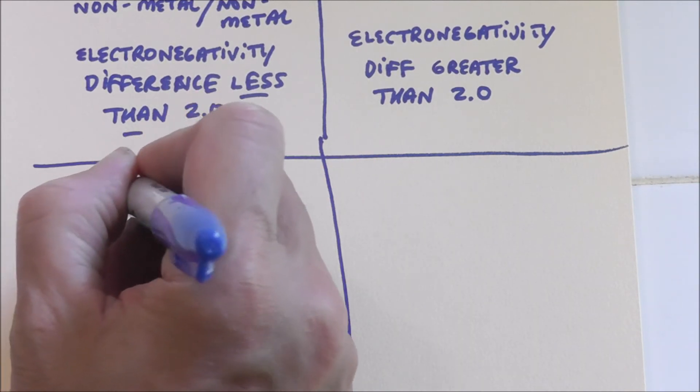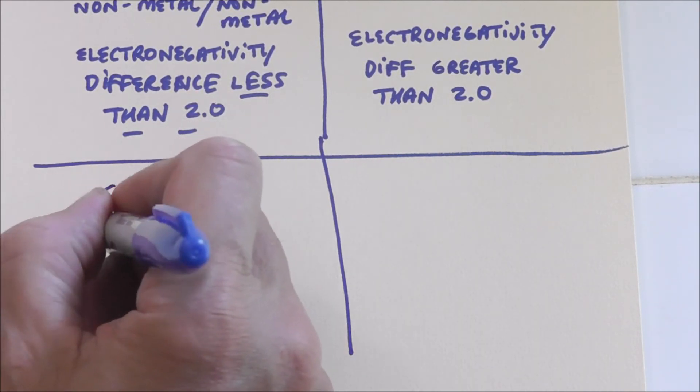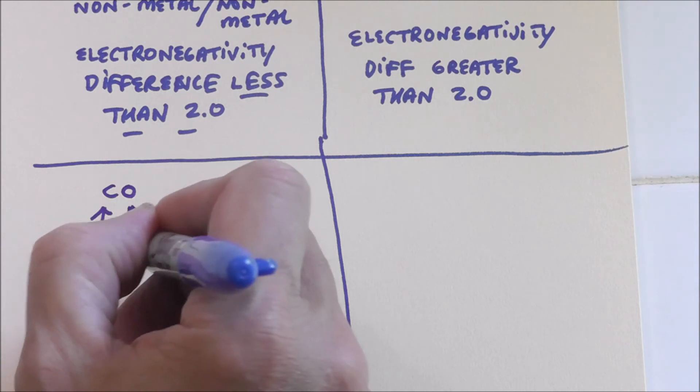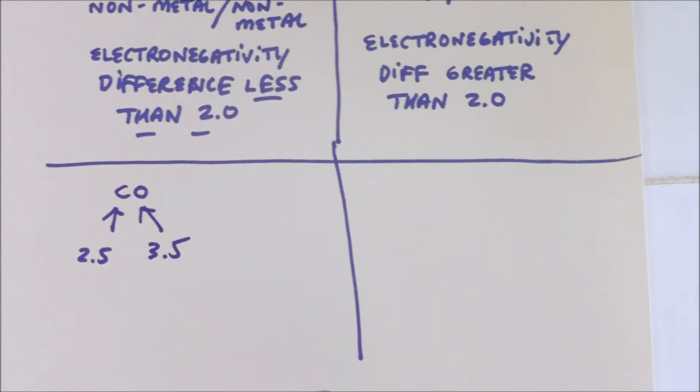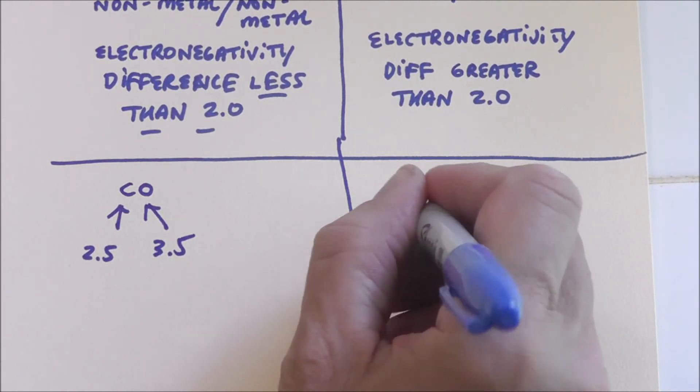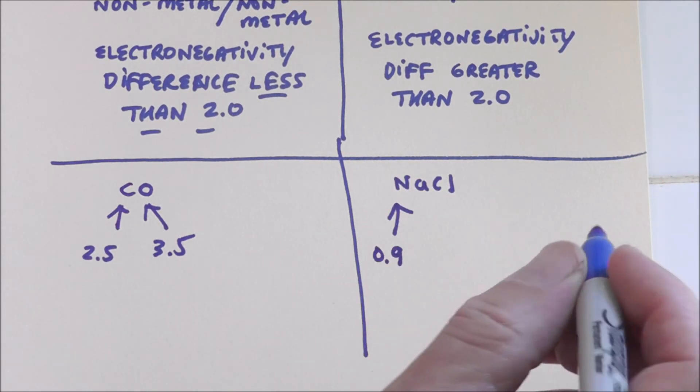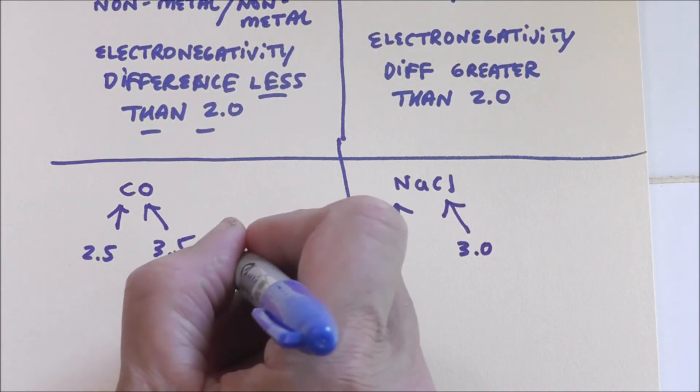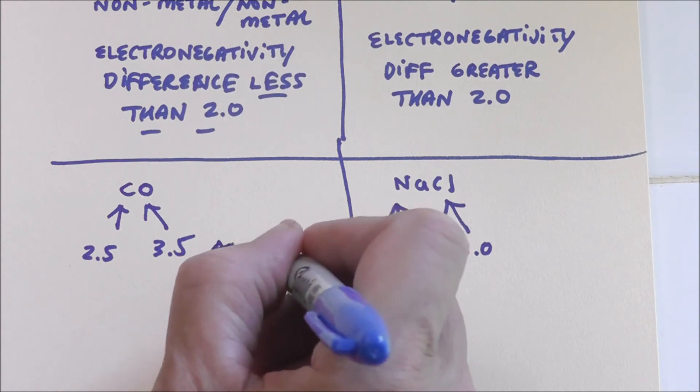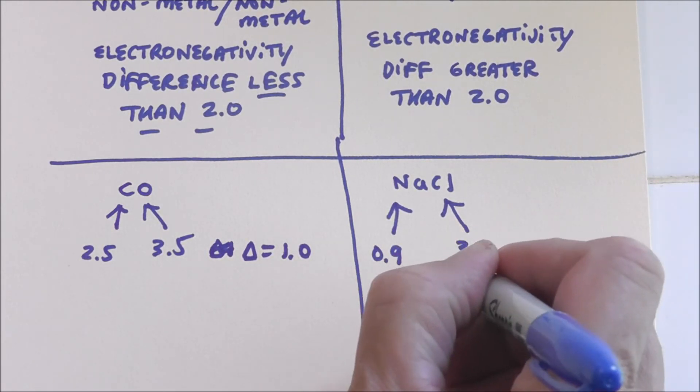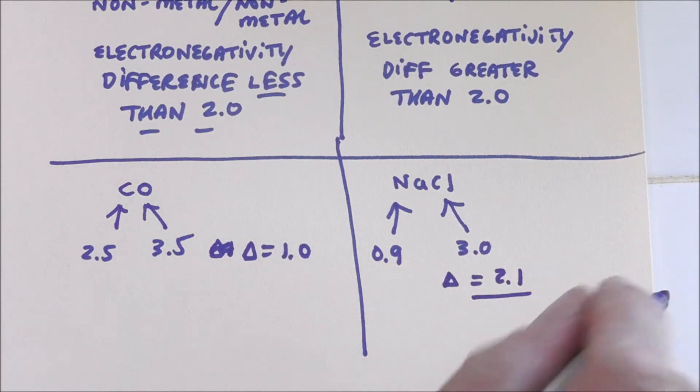I've got carbon monoxide. That is an electronegativity of 2.5 for carbon. Oxygen's 3.5. So, we would call that compound covalent or molecular. Table salt, NaCl. Electronegativity for sodium in most tables you see will be 0.9. Chlorine, 3.0. And so, you see, you have a delta here. Let's just call it a delta. 1.0. That qualifies as covalent or molecular.